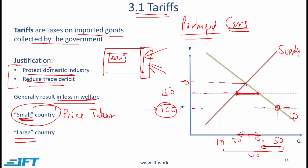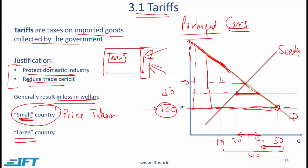Is there any impact to consumer surplus? When we had free trade with no tariffs, the consumer surplus was this entire triangle — connecting back to earlier economics readings where we discussed consumer surplus and producer surplus. Consumer surplus means a consumer is willing to pay the amount indicated by the demand curve but is only paying 100, so that entire area represents consumer surplus. When the tariff is imposed and the price rises to 150, a substantial portion of consumer surplus is lost.